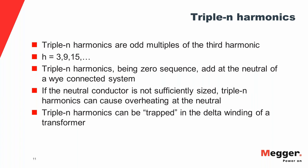Zero sequence or triple N harmonics can also be trapped in the delta winding of a transformer. One main application of the delta winding is to provide a circulating path for zero sequence currents. When zero sequence current flows in the system and encounters a grounded-Y delta transformer, it flows into the Y winding down to the neutral, but on the delta side it circulates within the delta winding and does not propagate further through the system.